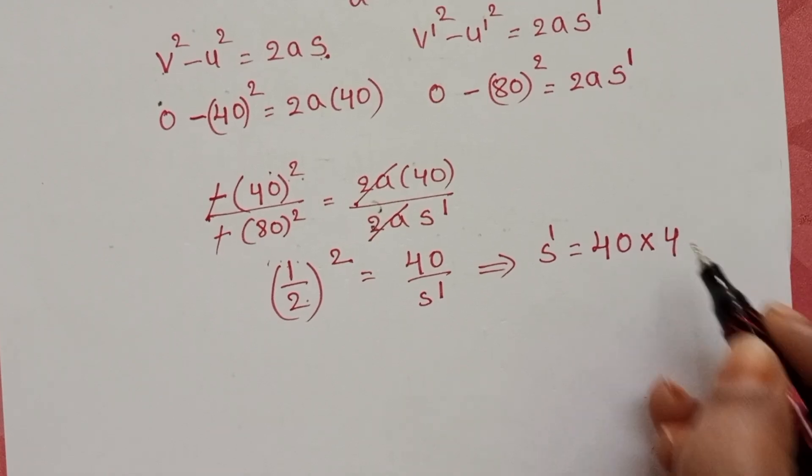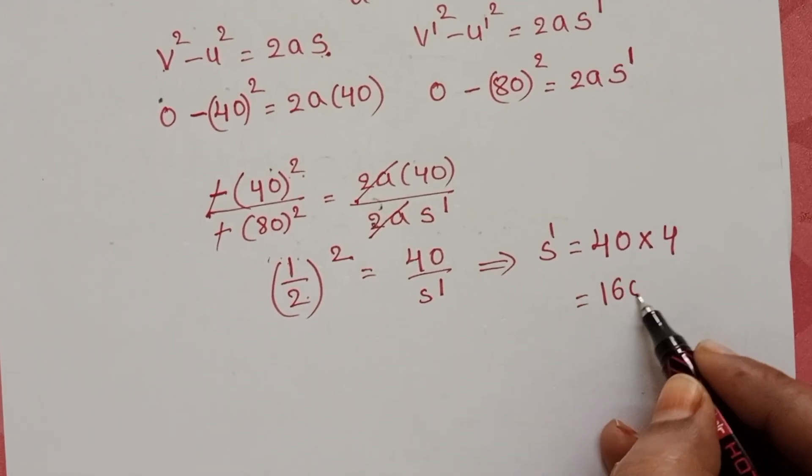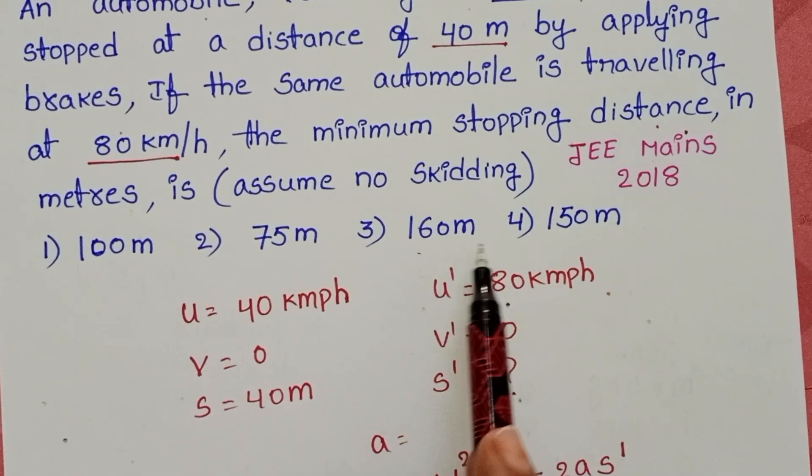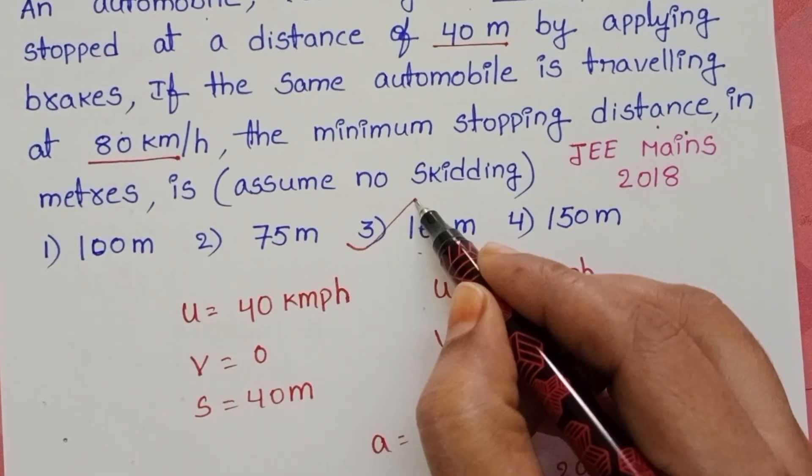So 40 × 4 equals 160 meters. The minimum stopping distance is 160 meters. The third option is correct.